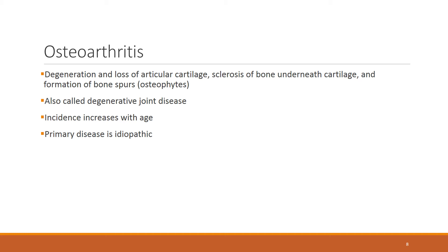When osteoarthritis occurs, inflammation of the joint may result in loss of articular cartilage and formation of bone spurs. While any joint inflammation can be called arthritis, osteoarthritis or degenerative joint disease specifically refers to a process of wear and tear — the wearing out of the joint. Most people have some degree of osteoarthritis.